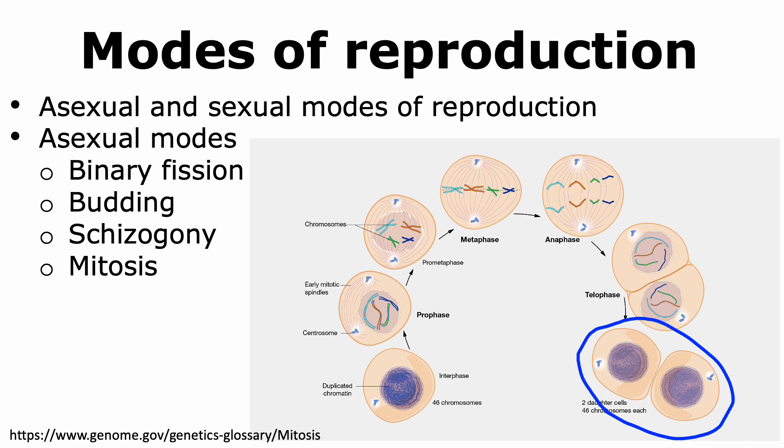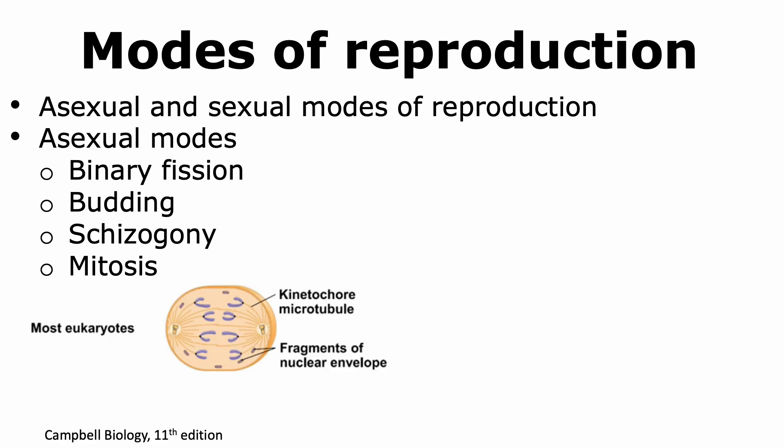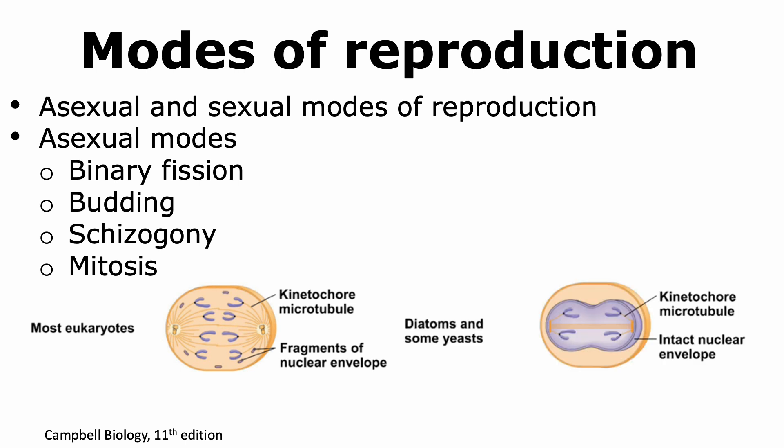Mitosis is much more complex than binary fission, budding, or schizogony. In fact, we are able to observe intermediate stages of mitosis in other types of protists. For example, in most eukaryotes there is a complete dissolution of the nuclear membrane before mitosis is completed. However, in some protists like diatoms and some fungi like yeast, we actually observe a mitotic spindle-type apparatus forming within the nucleus, with no dissolution of the nuclear membrane. Hence, mitosis has evolved over time to the process that we see today.